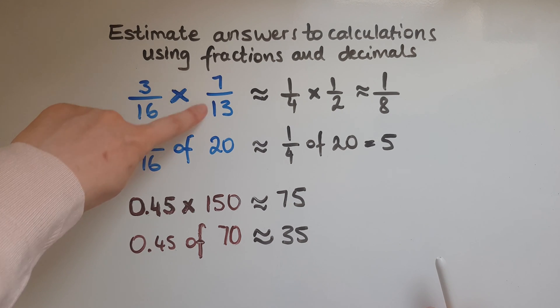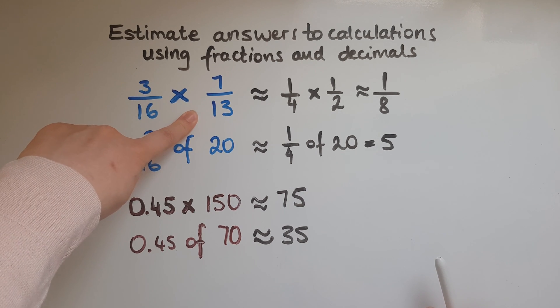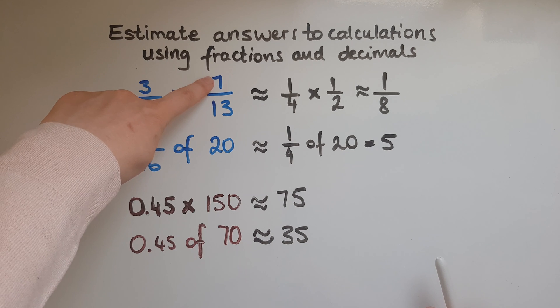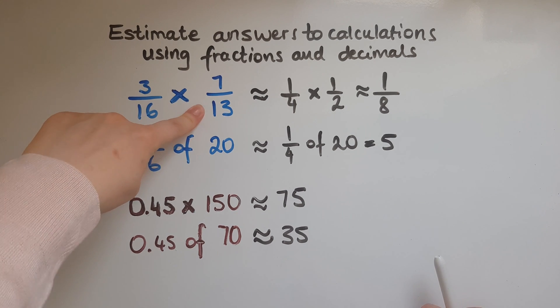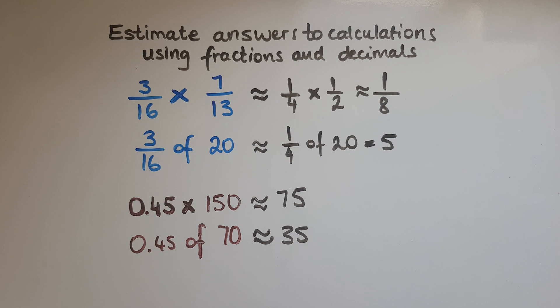And this one here, again, half or doubling that. So either multiplying both of the numbers or one of the numbers to see what's the relationship with the next one. So you get an approximate figure. So this is how you estimate answers to calculations using fractions and decimals.